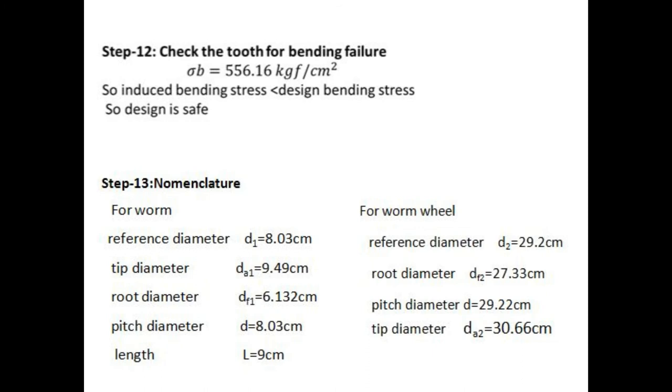For worm wheel, reference diameter D2 equals 29.2 cm, root diameter DF2 equals 27.33 cm, pitch diameter D equals 29.22 cm, tip diameter DA2 equals 30.66 cm.